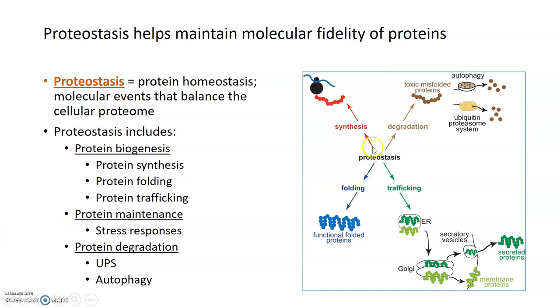Through the process of synthesis and folding and trafficking and degradation of proteins within the cell, there's a balance between having all the proteins that you need, making sure they're made correctly through folding, getting to the correct spot, and that any misfolded or damaged proteins are degraded. All these different parts of proteostasis help to maintain molecular fidelity and keep it high within the cell.